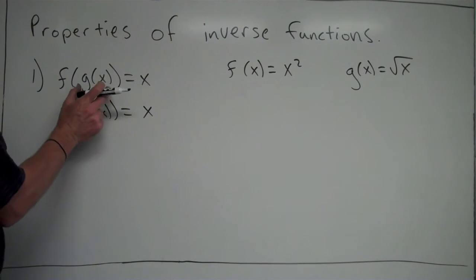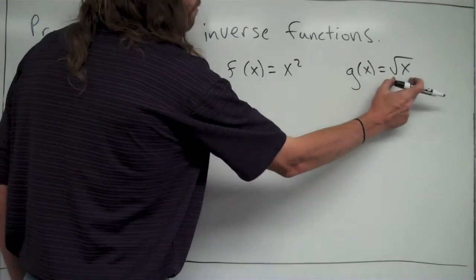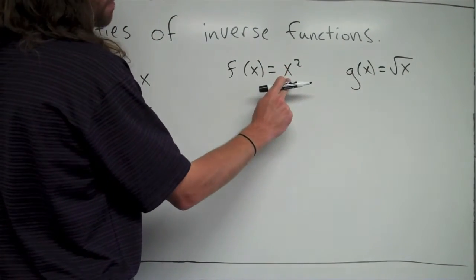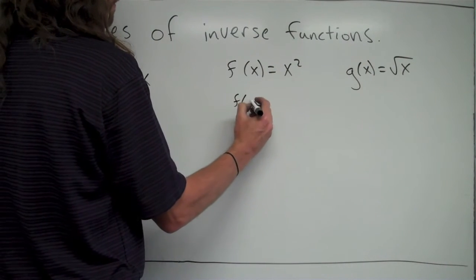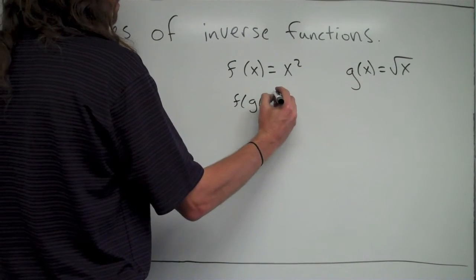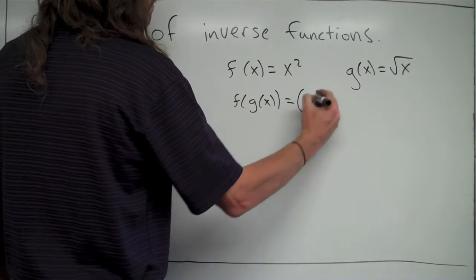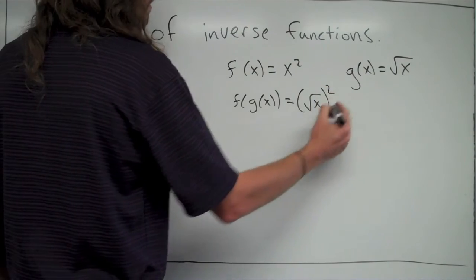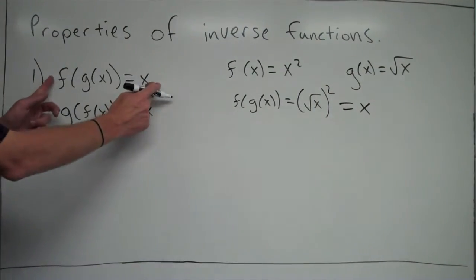So f of g of x means you take g of x and put it into f of x. Take g of x, square root of x, and put it in for x in the function f of x here. So f of g of x would be square root of x squared, which is equal to x. So this is met right here.